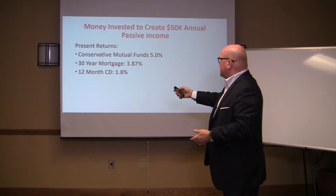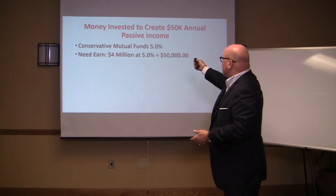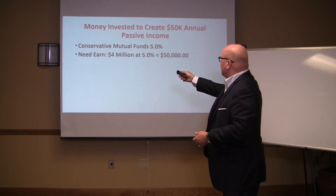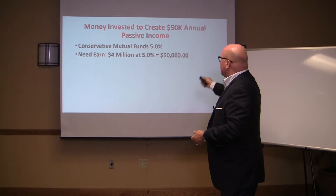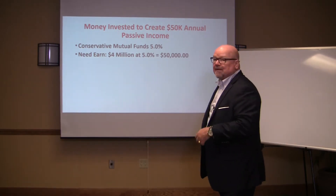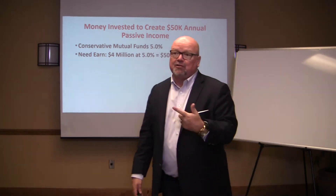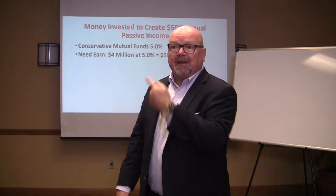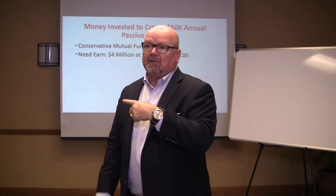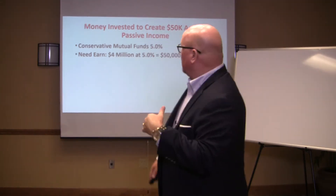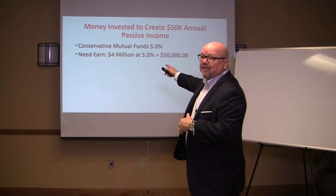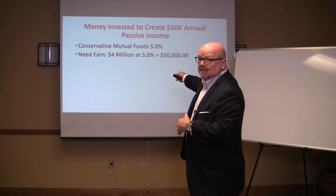So you'd need four million dollars at 5% to generate $50,000. But you're not getting 5% now — it's 2.5% — so that'd be eight million dollars you'd have to have invested at 2.5%.